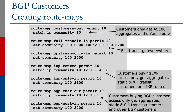This community is going to be set on everything that comes in. So for full transit, it's going to go everywhere. For upstream-only on the inbound, we set the community 100:2000.